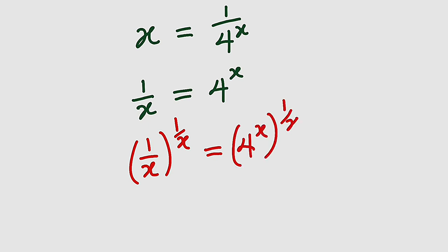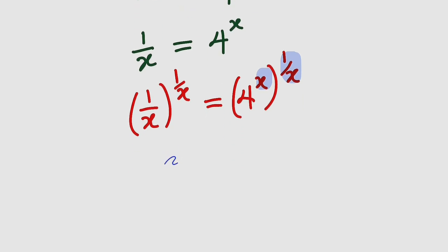You can clearly see that if you multiply these two exponents, you're going to obtain 1, so they will cancel out. What we have to the left hand side is (1/x)^(1/x)...